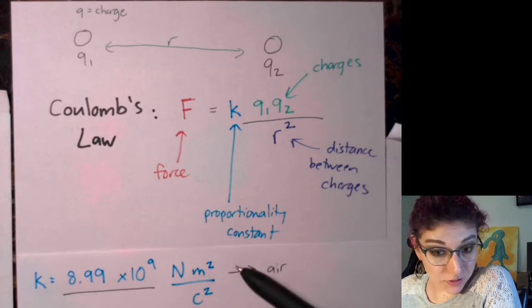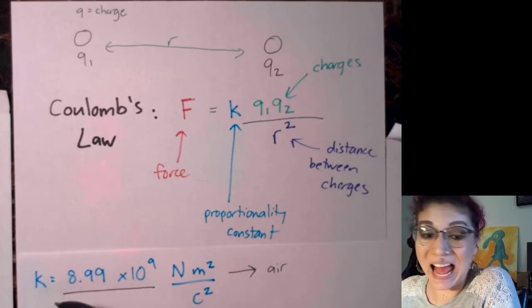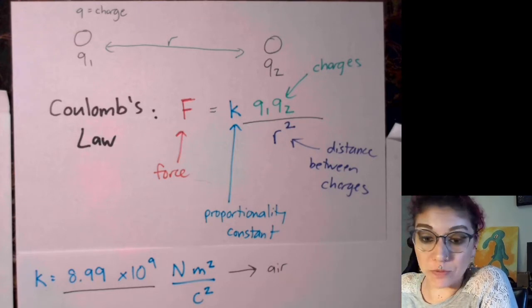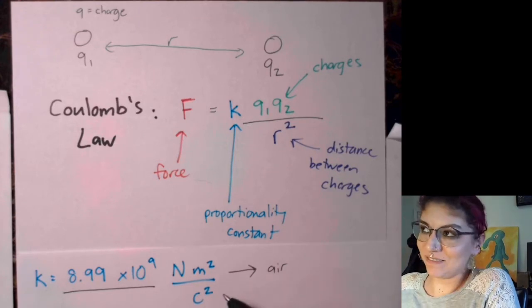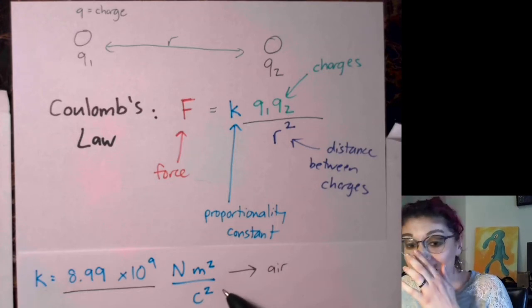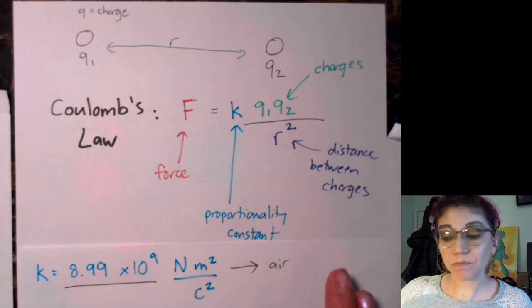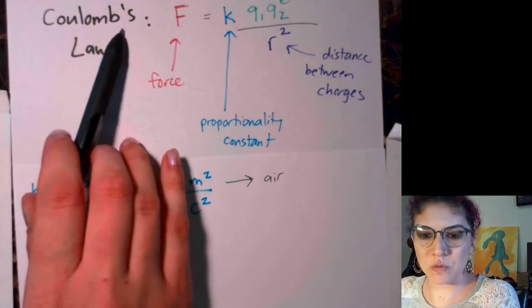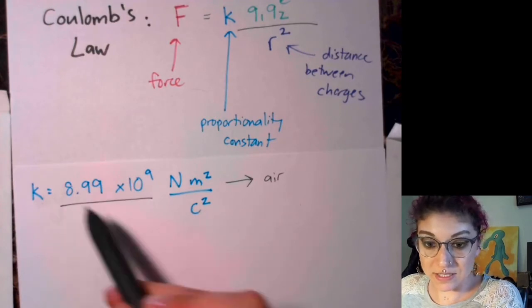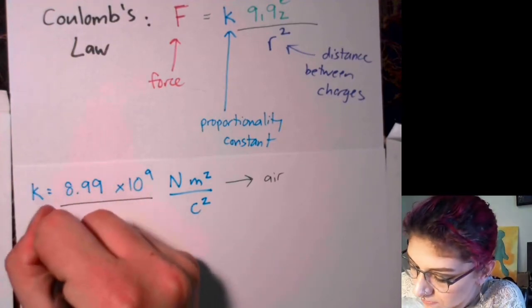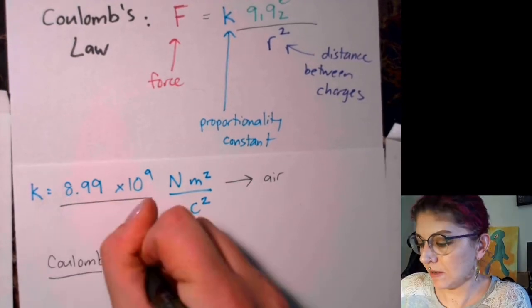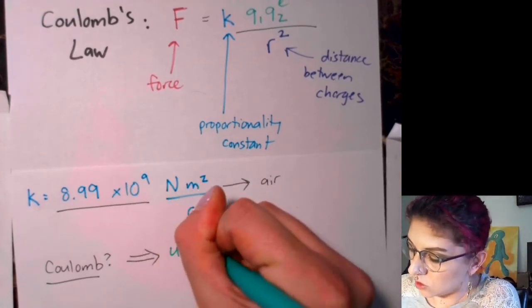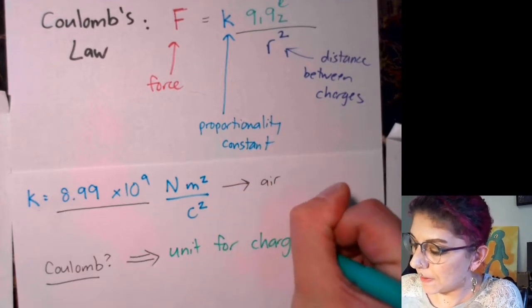As a side note, if you're interested in understanding why the proportionality constant has those somewhat unusual units, send me an email or message me on Slack — I'm glad to go over it, though it's not really in scope for this class right now. I also want to point out what the coulomb unit actually is: a coulomb is the official unit for charge.